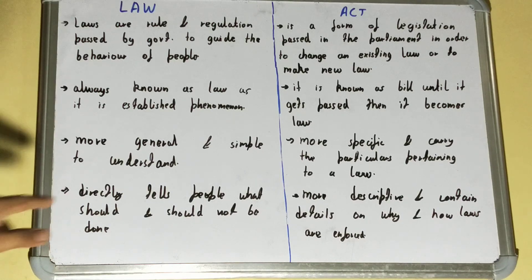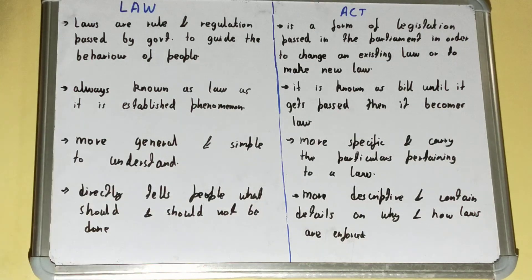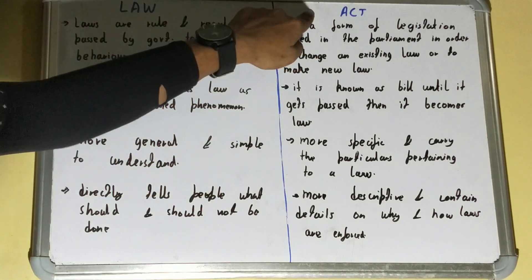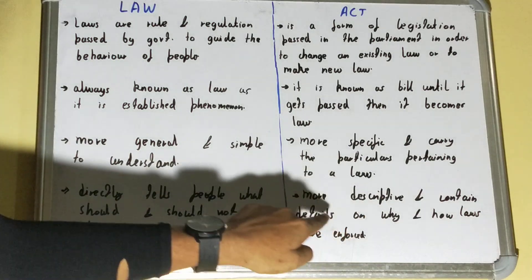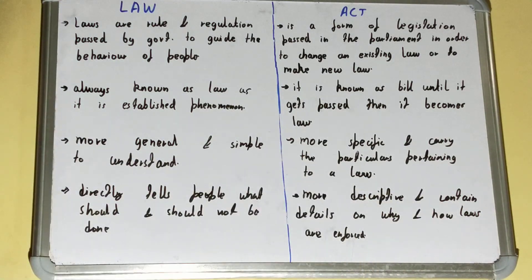Law directly tells people what should and what should not be done — it defines the rules that guide people. But if you talk about the act, it is more descriptive and contains details on why and how laws are enforced. The act contains all the details of a law: how it is built, why it is built, and how it will be enforced.